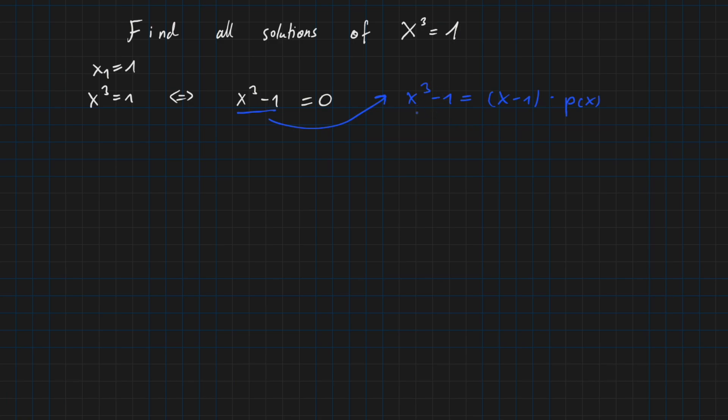So as 1 is a zero of this polynomial, we have at least one factor which is x minus 1. And we don't know yet what the other polynomial is. It is a polynomial of degree 2, because our original polynomial has degree 3 and we already factored out a linear polynomial. So p of x is a polynomial of degree 2.